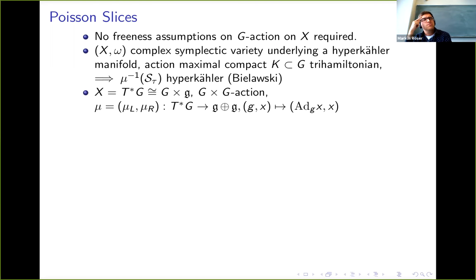So one particular example which is relevant for us today is when we start with just the cotangent bundle of the group. This comes with a natural G×G action given by left and right translation. The moment maps are written down on the slide. We get a natural symplectic structure on G×S. The moment map for the right action is just projection onto the algebra factor.